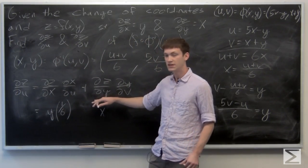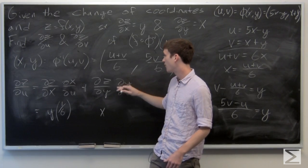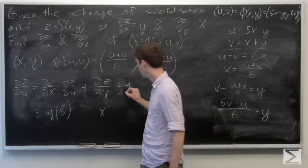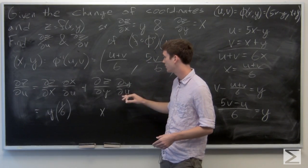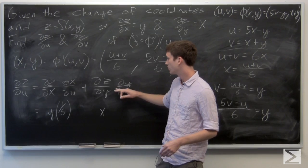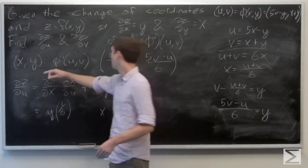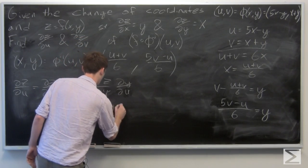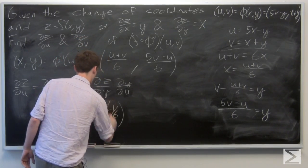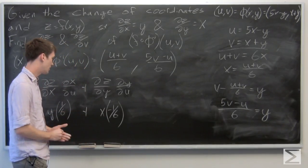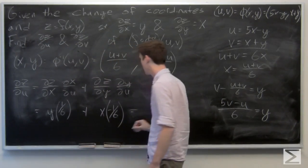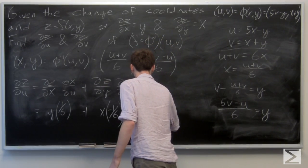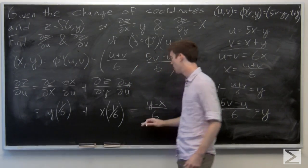And the partial derivative of y with respect to u — note it should be u, not v, on the bottom of that last partial derivative. The partial derivative of y with respect to u is negative 1/6. So plugging in the known values, we get the partial derivative of z with respect to u equals y times (1/6) plus x times (−1/6), which is (y minus x) over 6.